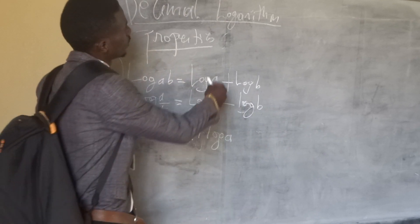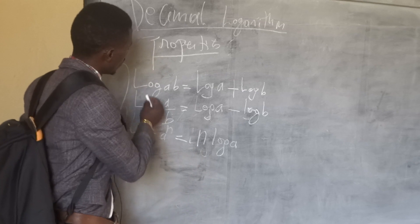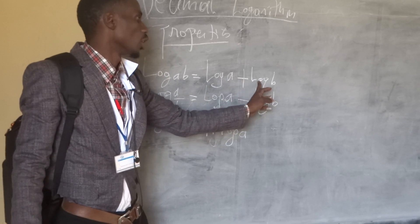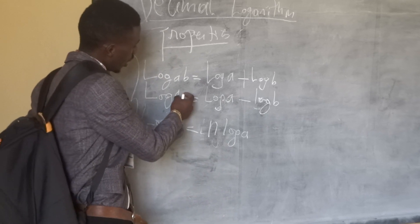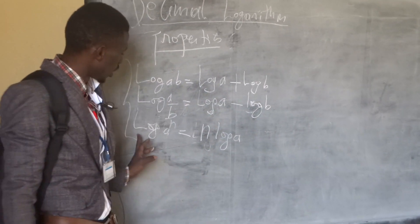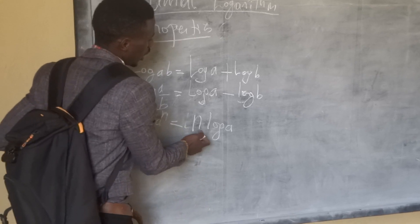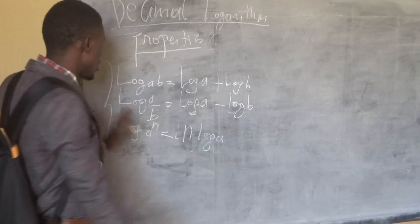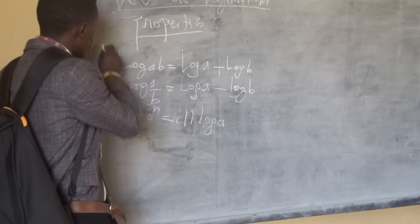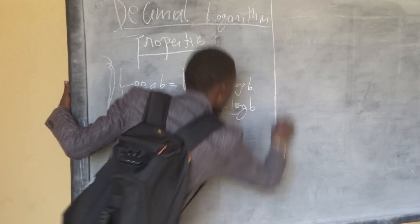Logarithms. Here we have properties of logarithms. Log of A times B is equal to log A plus log B. Logarithm of A over B is equal to log A minus log B. Logarithm of A to the power N is equal to N times log A. These are the properties you consider in order to solve questions related to logarithms.